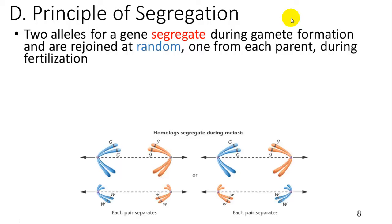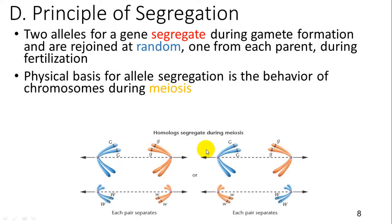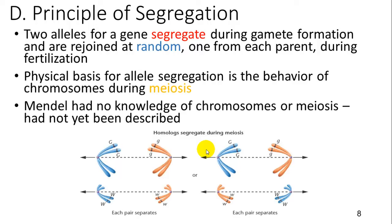One of Mendel's principles is the principle of segregation: two alleles for a gene segregate. If you have a purple and a white allele, they will go in opposite directions during gamete formation and are rejoined at random — one from each parent — during fertilization. This goes along with meiosis and the behavior of chromosomes going to opposite ends during anaphase. Mendel did not really have any knowledge of meiosis; he just noticed that these alleles separated.